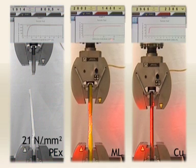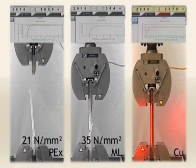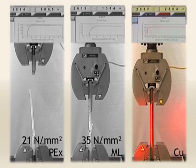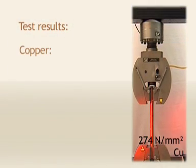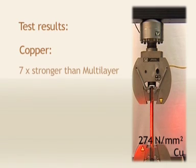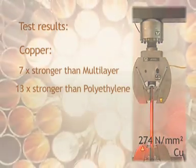This multi-layer tube reaches a maximum tensile strength of 35 newton. The maximum tensile strength of this copper pipe goes up to 274 newton per square millimeter, which indicates that it is 7 times stronger than multi-layer and as much as 13 times stronger than polyethylene.